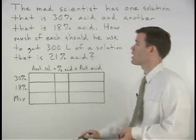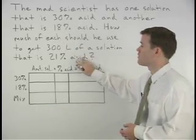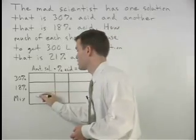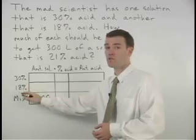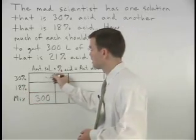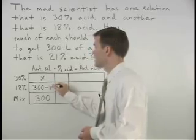So for our amount of solution column we know that we have 300 liters in our final mixture. So we can split up the amount of solution for each of our original solutions as x and 300 minus x.